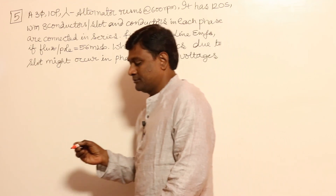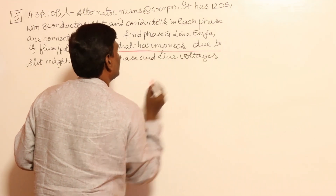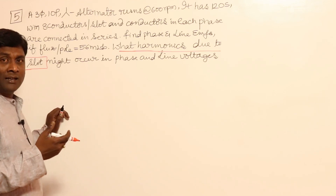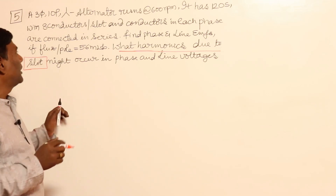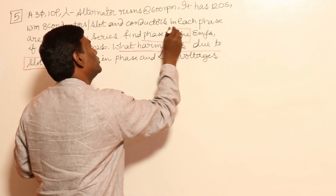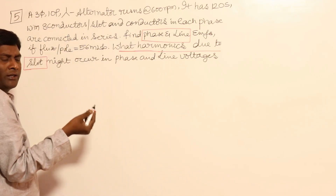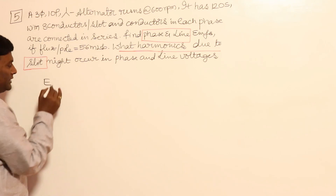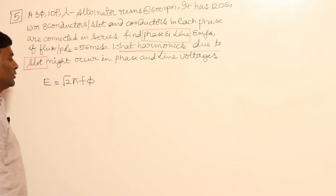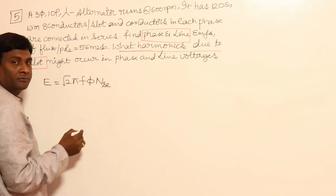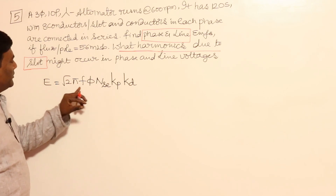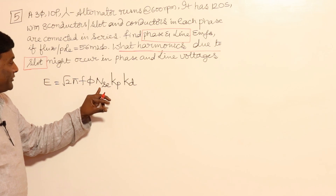What harmonics will occur due to slots — I may not be able to explain in detail, but I will tell you how to calculate. Now, induced voltage has to be calculated — finding the phase and line voltages. The induced voltage equation is the same as in a transformer: E = √2 · π · f · Φ_max, but here it's √2 · π · f · Φ · number of series connected turns, times Kp and Kd — the winding factor. This gives per-phase voltage.